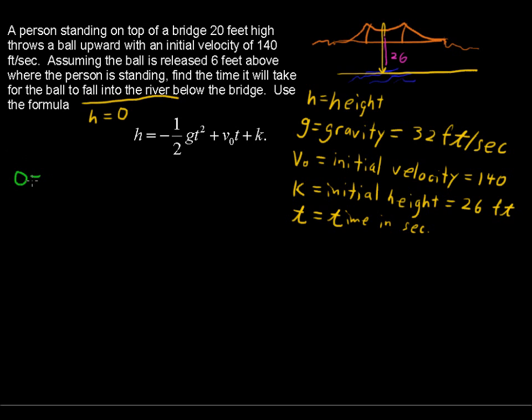We have zero equals negative one half times the 32 times the t squared. t is the unknown. Plus the initial velocity, which is 140 feet per second times t, plus that initial height of 26 feet.